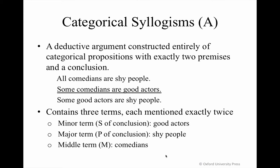We have a syllogism when we have a deductive argument which is constructed entirely of categorical propositions with exactly two premises and a conclusion. There are other types of syllogisms that involve statements that are not categorical propositions, but we'll get to those in another chapter — chapter eight.